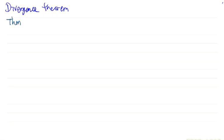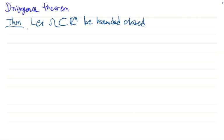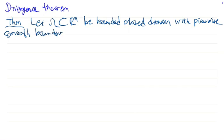The theorem is stated here. Let ω be a bounded closed domain in R^m. A domain is a pathwise connected open set, and the closure of a domain is a closed domain. The boundary is a piecewise smooth boundary, and f is a vector field over ω — that is, a vector-valued function from ω to R^m.